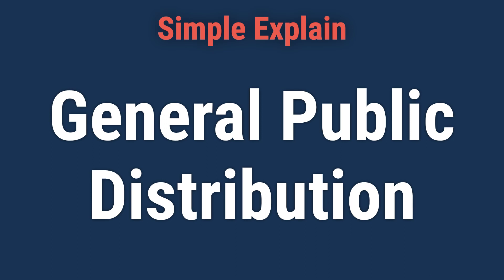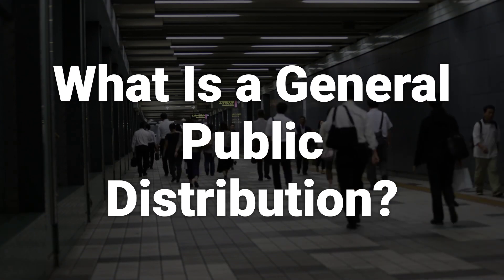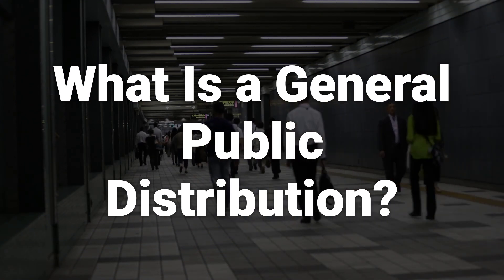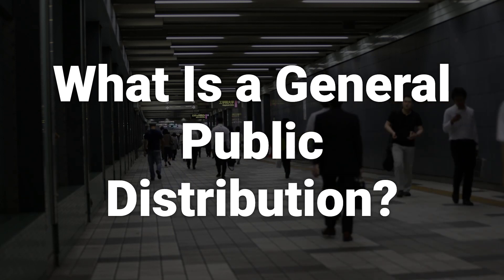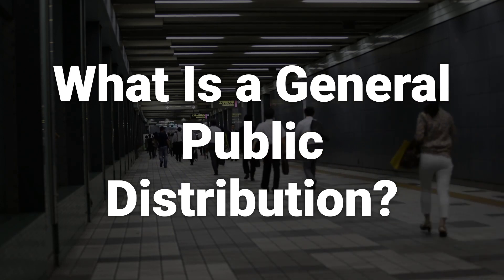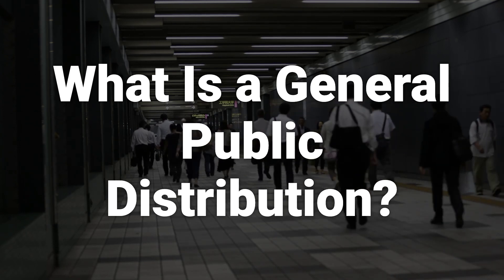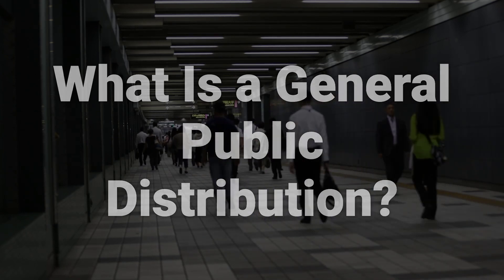Today, we will talk about general public distribution and how it works. In finance, general public distribution refers to a private company becoming a publicly traded company by selling its shares to the public at large. This is different from a conventional public distribution, where shares are sold mainly to institutional investors.